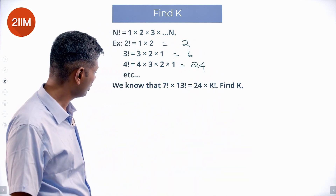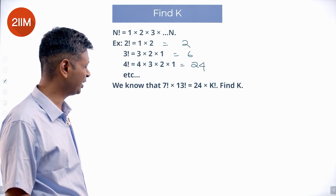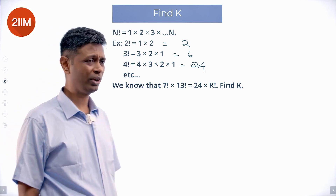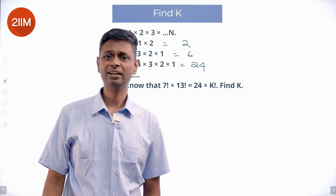We know that 7 factorial times 13 factorial equals 24 times k factorial. Find k.